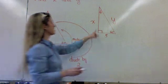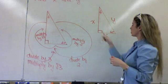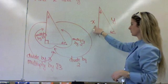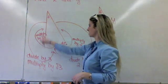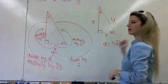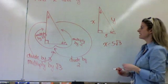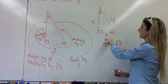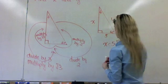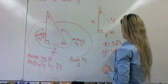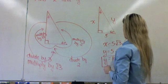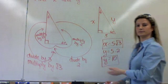Let's try an example — find x and y. I have the short leg and I need to find the long leg and the hypotenuse. Short leg to long leg is multiply by root 3, so x is going to equal 5 root 3. Now for the hypotenuse: short leg to hypotenuse is multiply by 2, so y is going to equal 5 times 2, which equals 10. So y equals 10, and you're done.